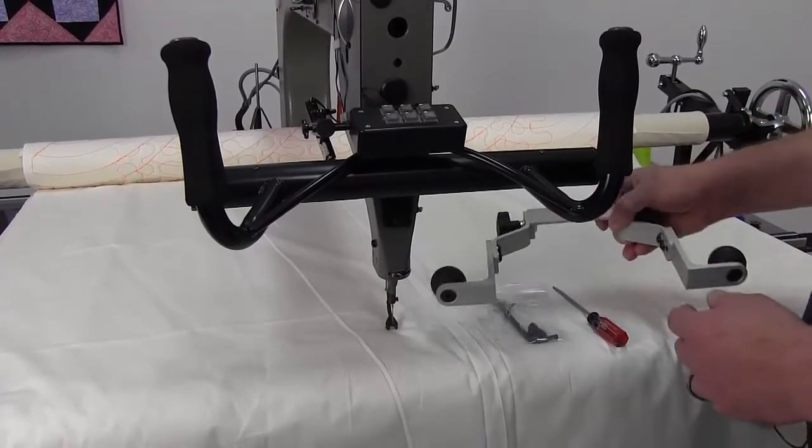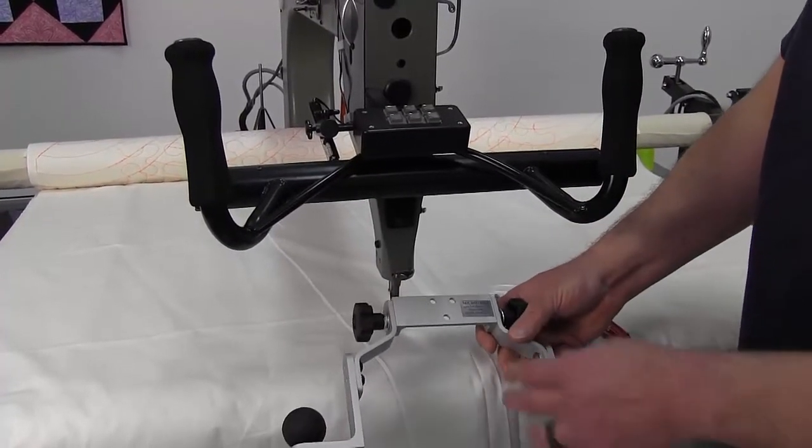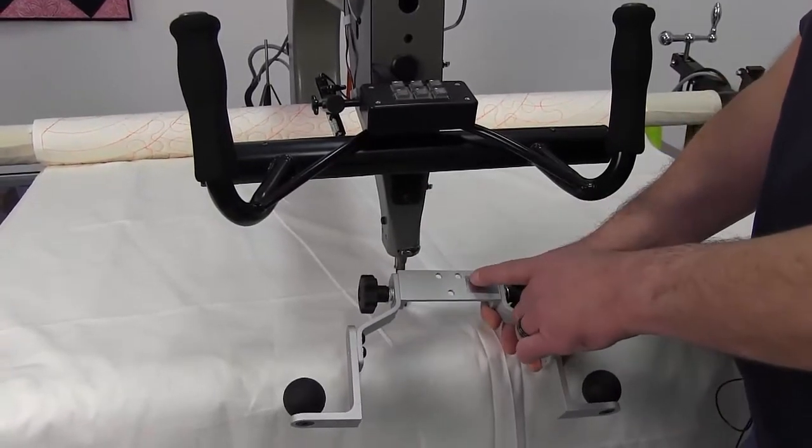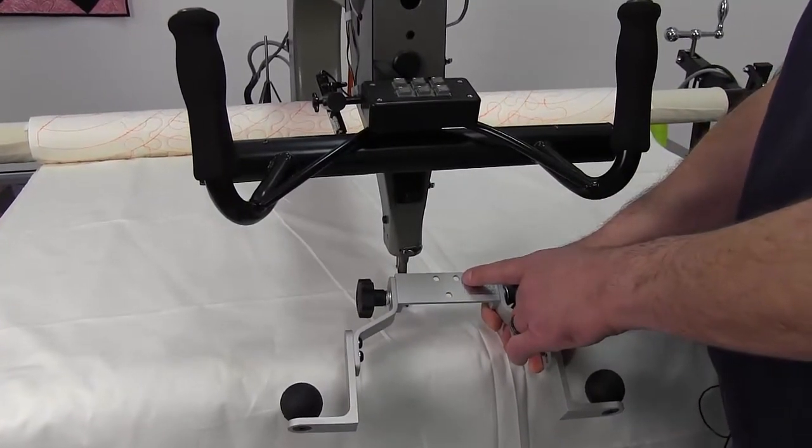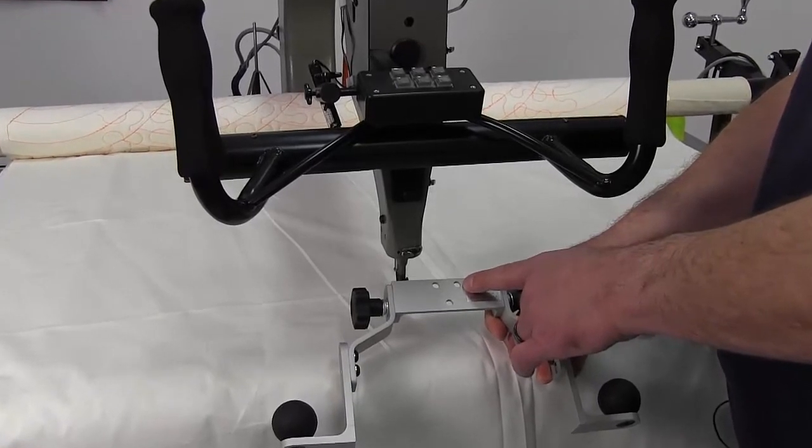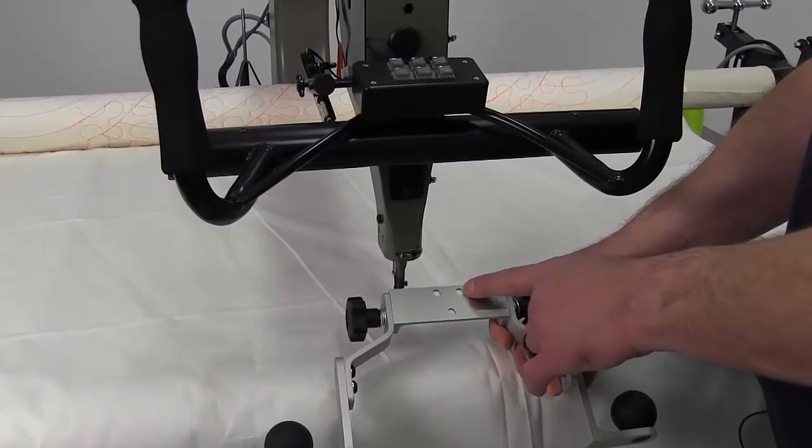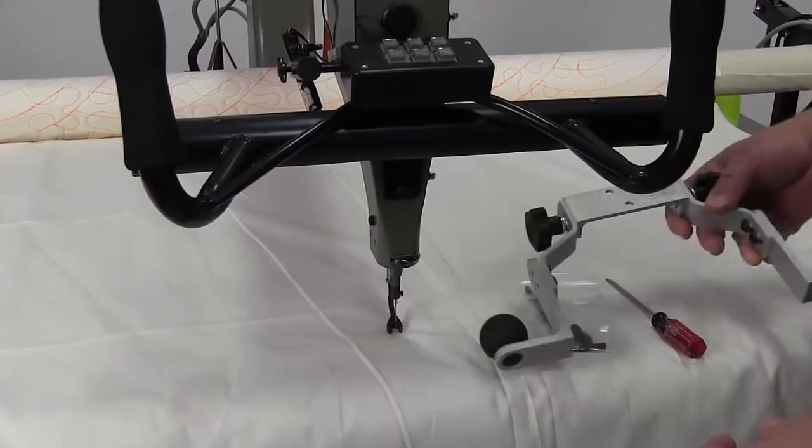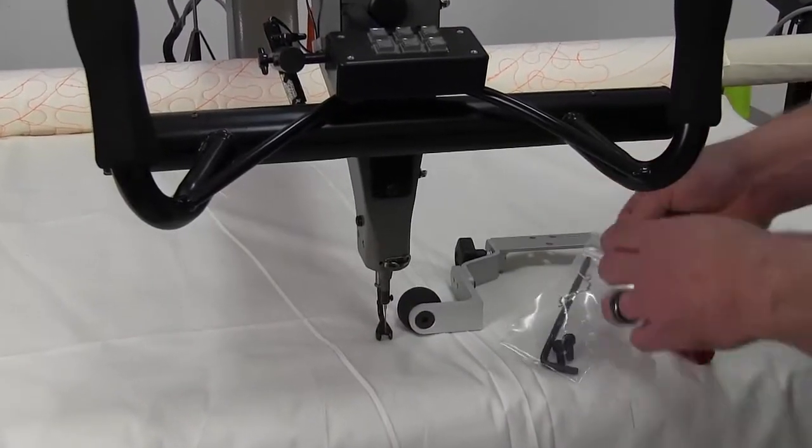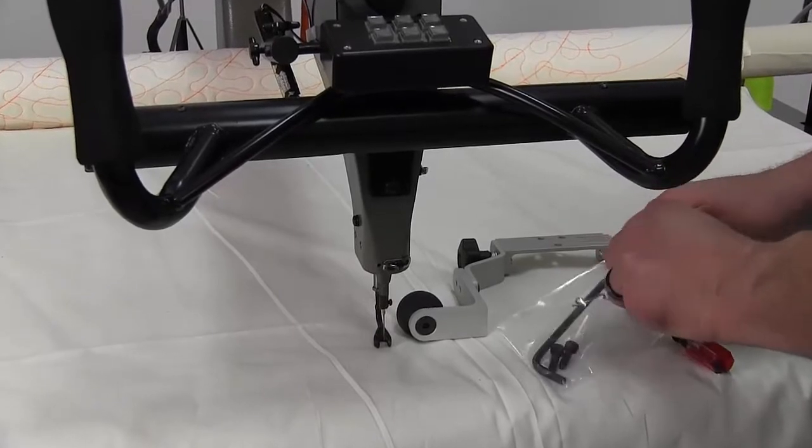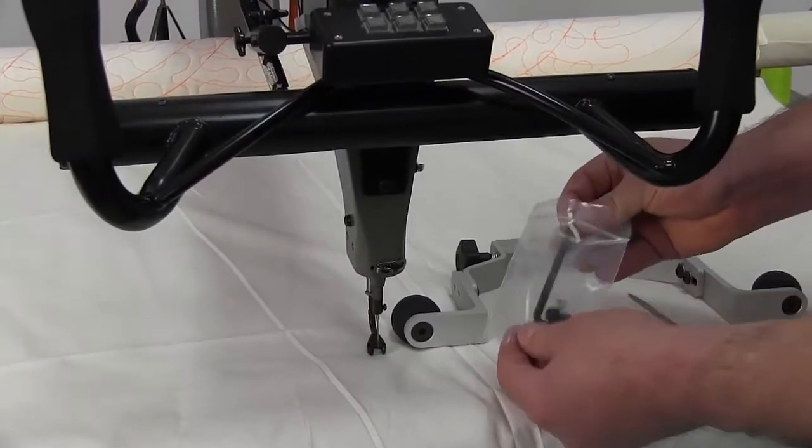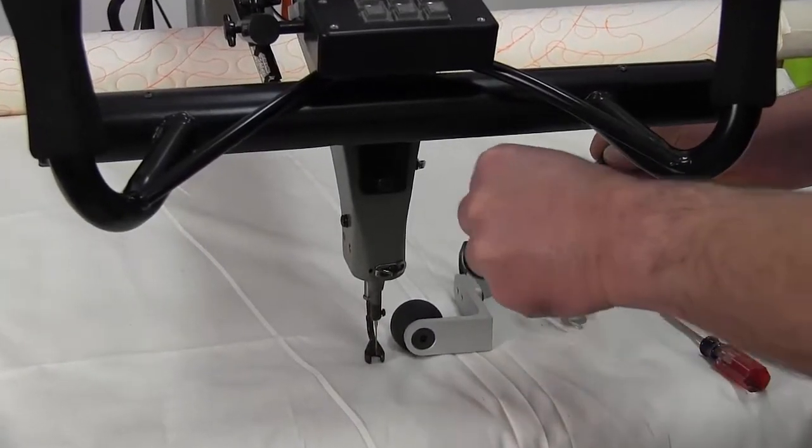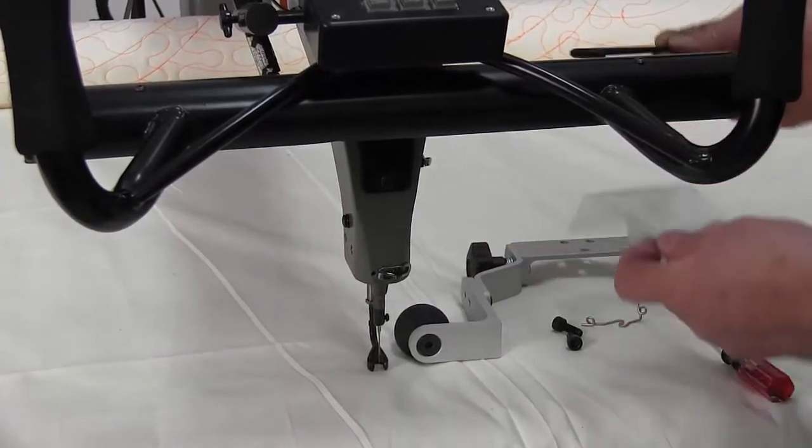The 30 model has one hole. The 18, the 26, and the 22 have two screws that you'll need to remove. In this particular case, we're using a 30. We're going to take out our screws and our thread guide.